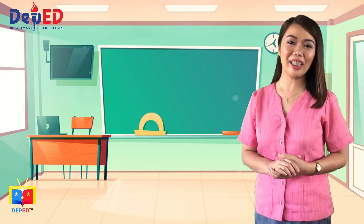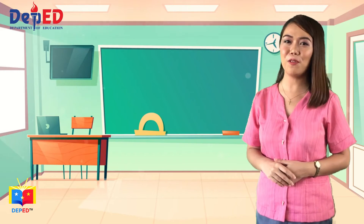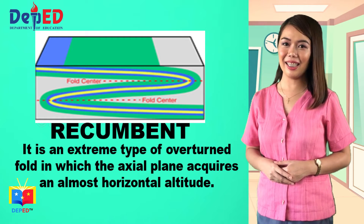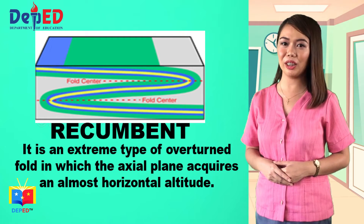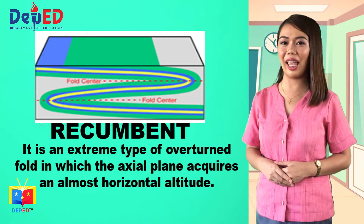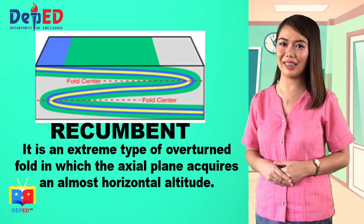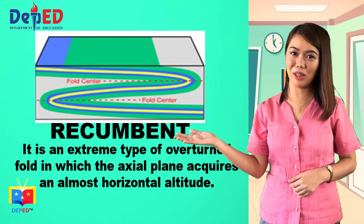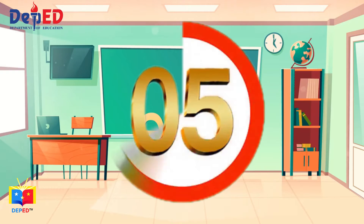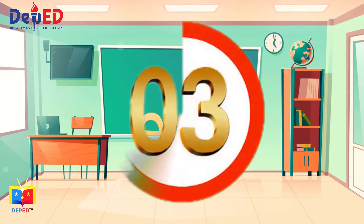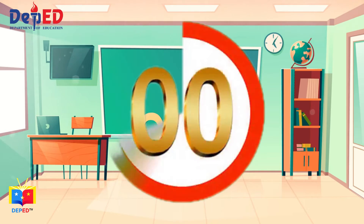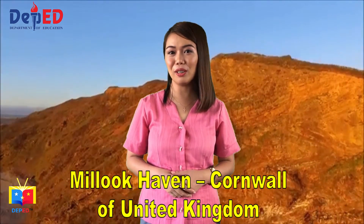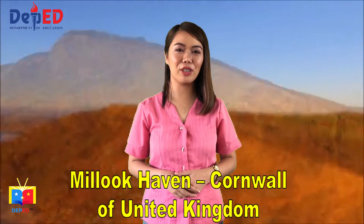We are down to the fifth type of folds, which is recumbent. It is an extreme type of overturned folds in which the axial plane acquires an almost horizontal position. One example of recumbent fold is Mylor Haven, Cornwall, United Kingdom.